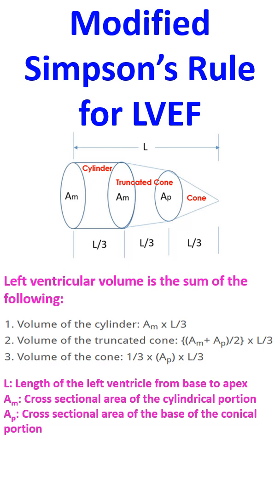The volume of the cone equals one third of the base area of the cone multiplied by one third of the total left ventricular length. In modified Simpson's rule, these three sections are assumed to be of equal length, or equal height if kept vertically.